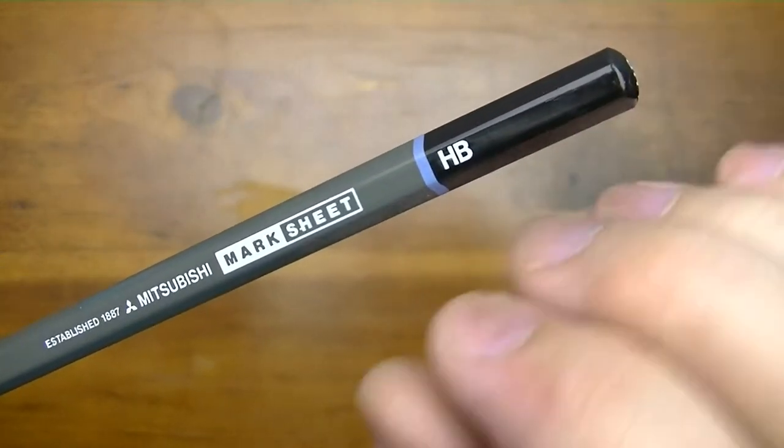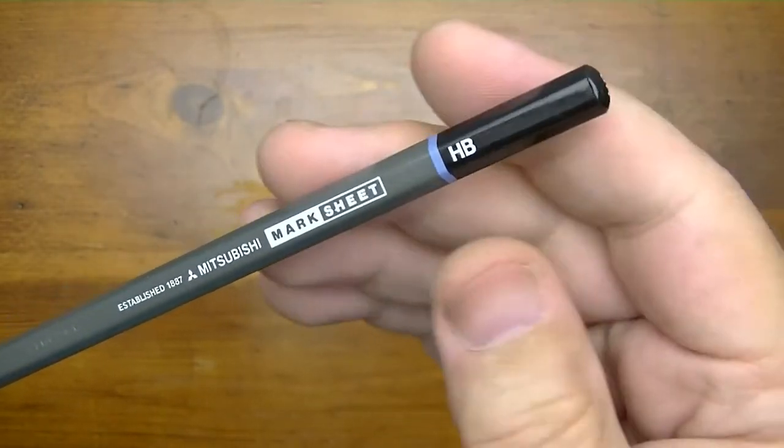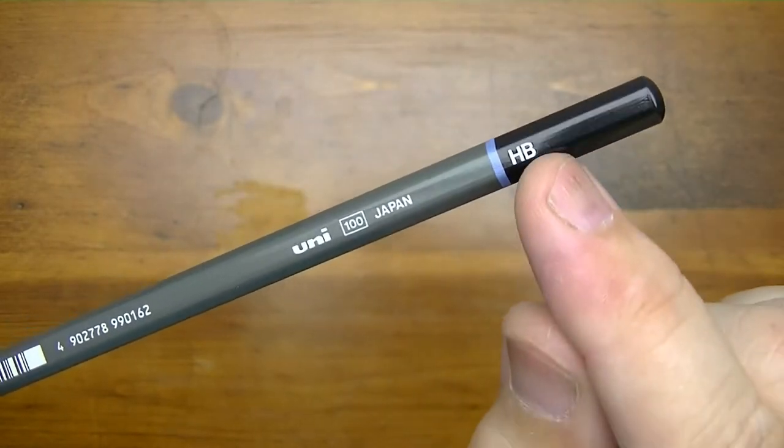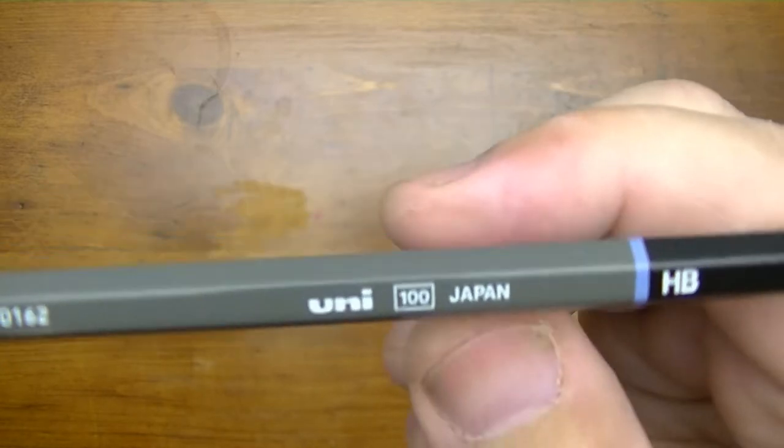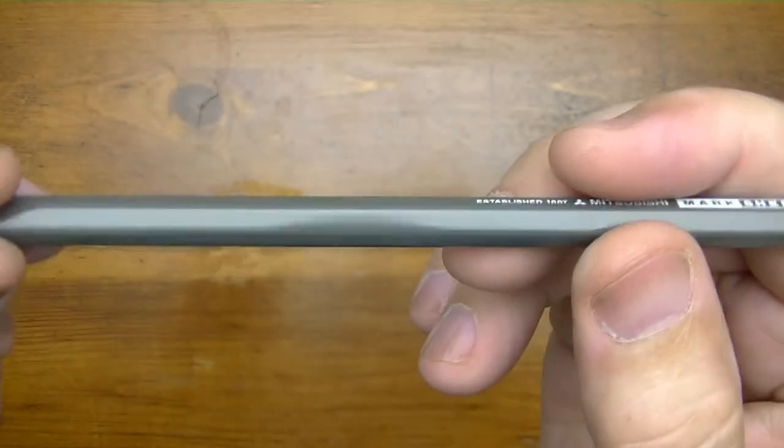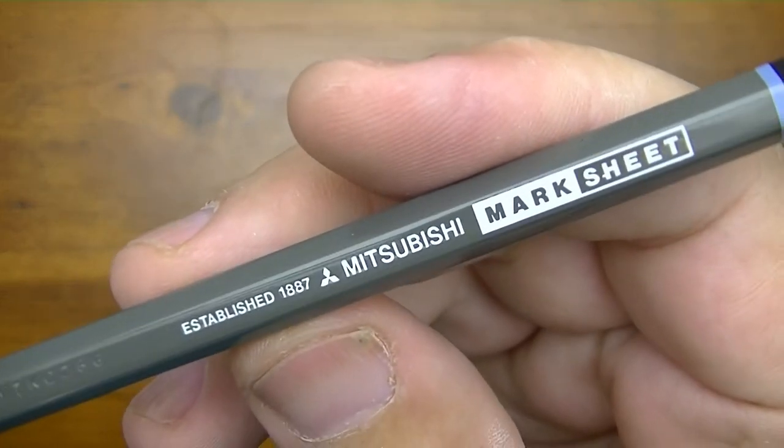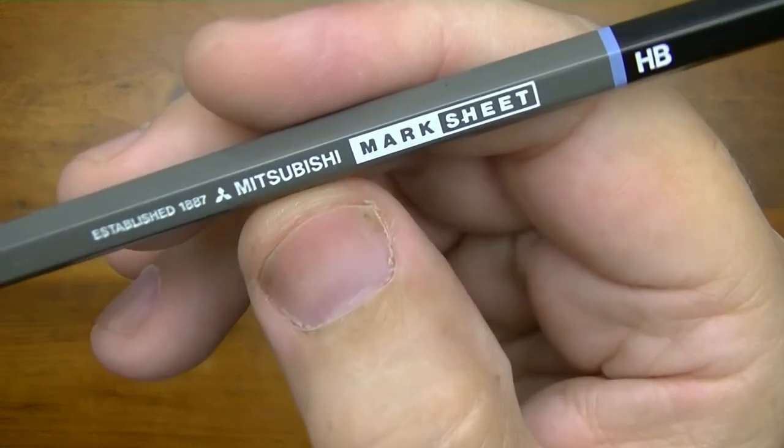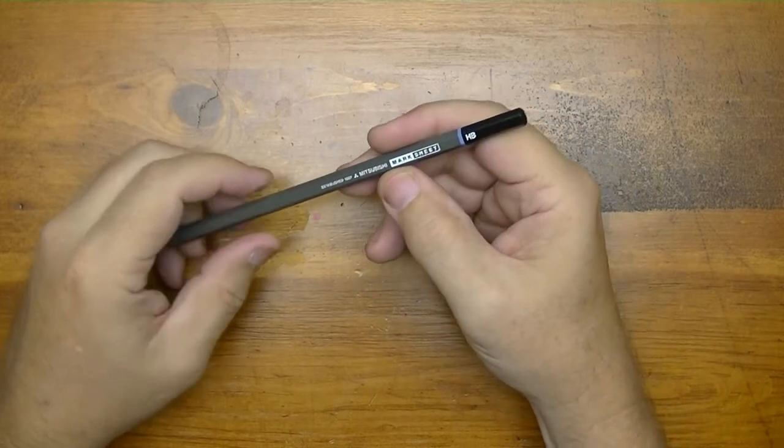And it's just like a drawing pencil in that it doesn't come with an eraser on the end. And you'll notice that it has the grade written on the end here just like a drawing pencil would have. And if we turn it around, we see there's one on the other side. So there's one on one side, one on the other. And it does say Japan, so that most likely was Japanese. Then you have the ugly barcode that you see on a lot of pencils, unfortunately. And then it says established, and I believe that says 1887 Mitsubishi Marksheet. So it's a Mitsubishi Uni pencil.